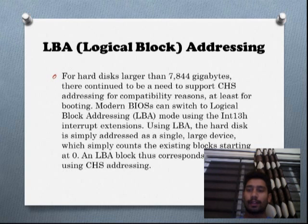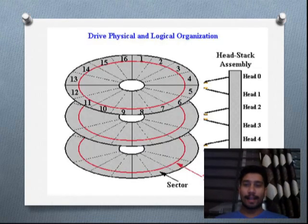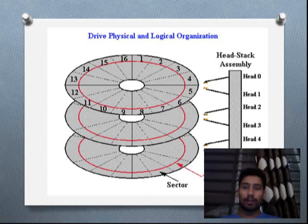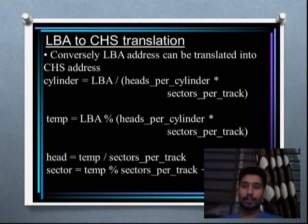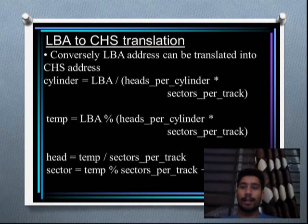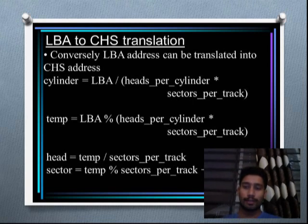LBA blocks correspond by using the CHS address. This is the diagram for logical organization. In this diagram we can find out about the LBA addressing head by head — head 0, head 1, head 2 — and like this we can identify the logical addresses. This is the conversion of LBA to CHS translation. The LBA address can be translated into CHS addressing, and the cylinder, head, and sector can be identified by using these conversions.